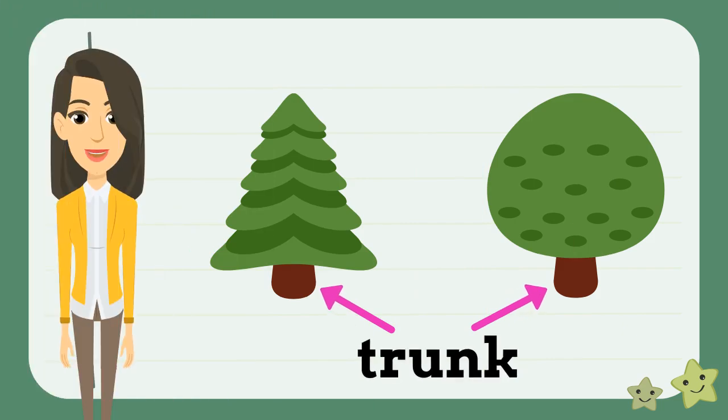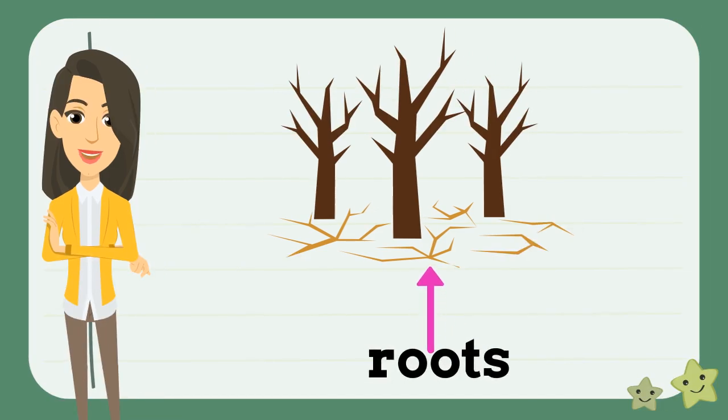Both kinds of trees have a trunk that holds up the tree and gives it support as it grows. Deciduous and evergreen trees both have roots in the ground. These roots take nutrients and water from the soil to help the tree live.